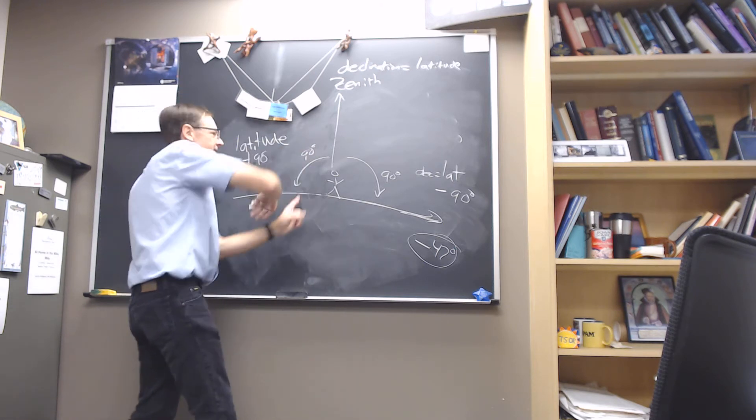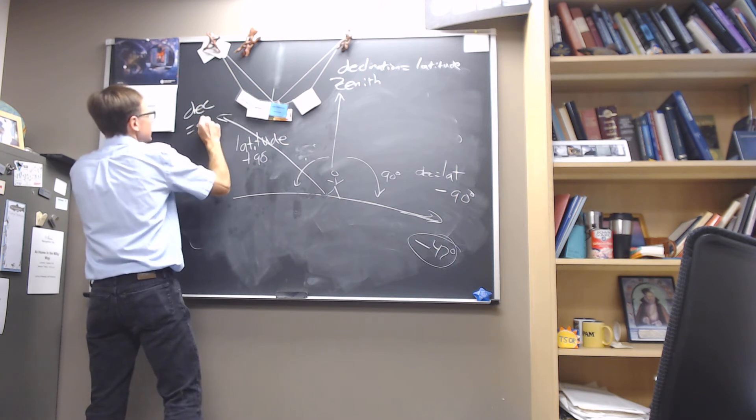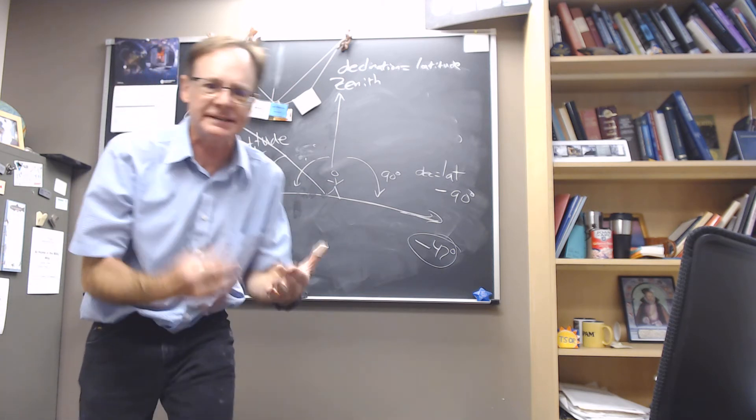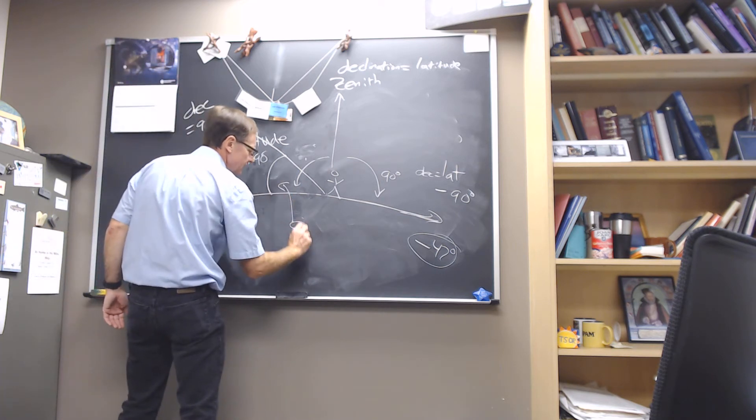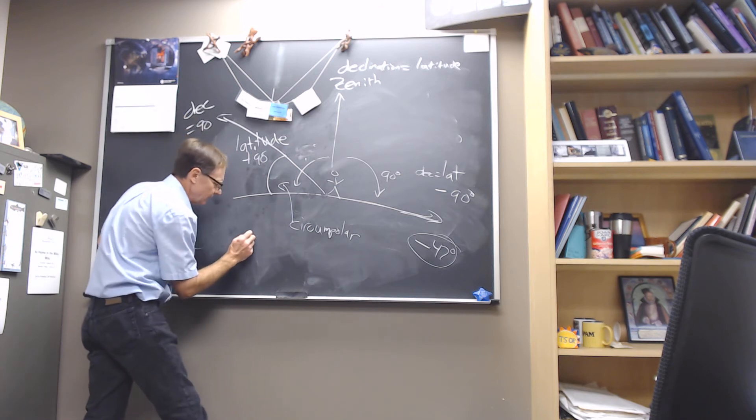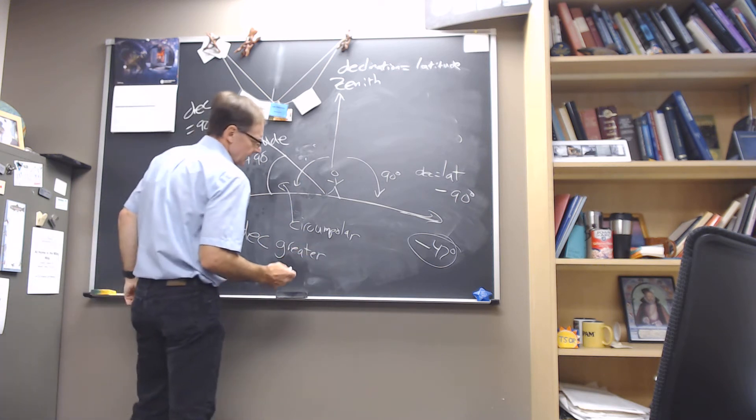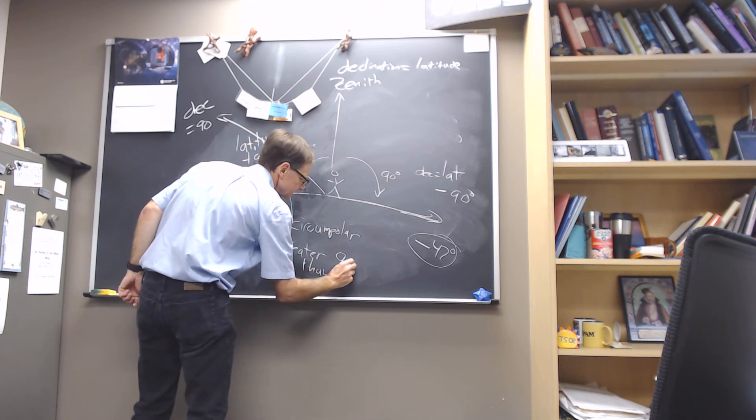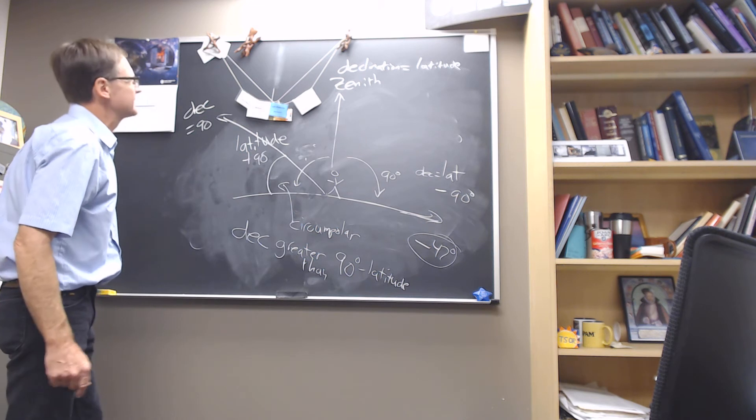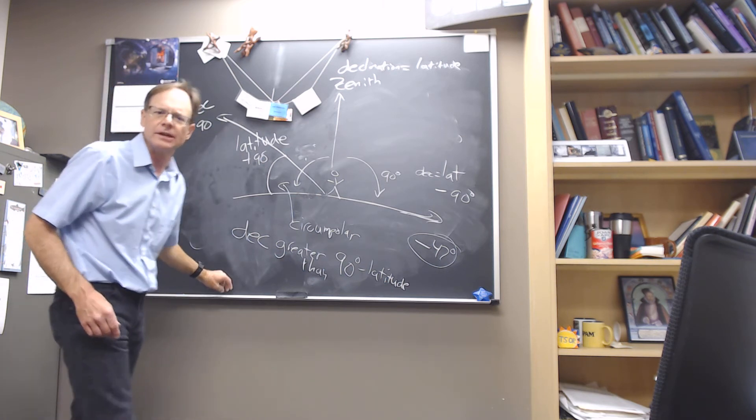But when you get to 90, you start counting back down again. So what happens is you have a whole group of stars that are up here. This is declination equals 90 degrees. You have a whole bunch of stars in here that you start counting back down that as they rise and set, they don't rise and set. They don't ever get below the horizon. And we call those the circumpolar stars that we can see in the sky anytime. And so the absolute theoretical limit for the circumpolar stars is going to be a declination that is greater than approximately 90 degrees minus your latitude.